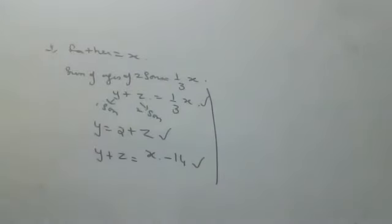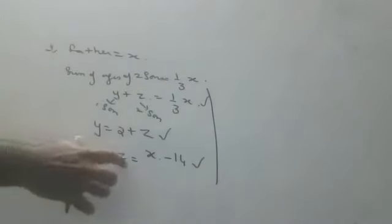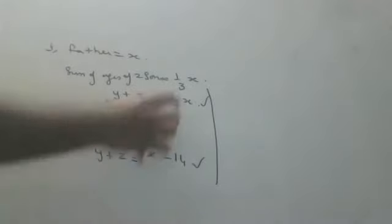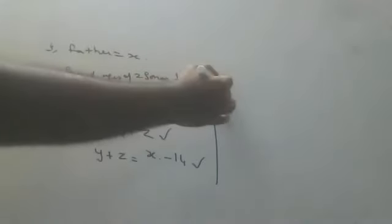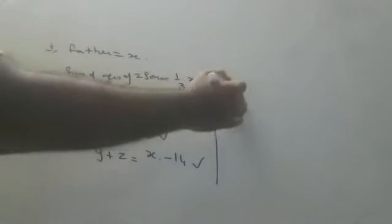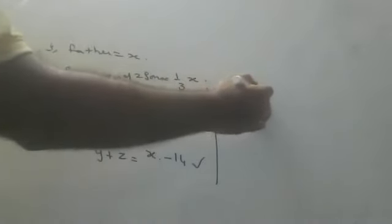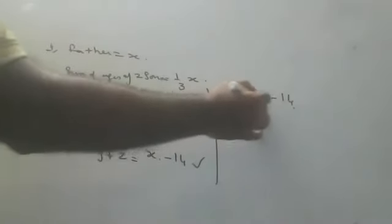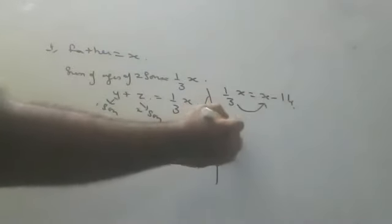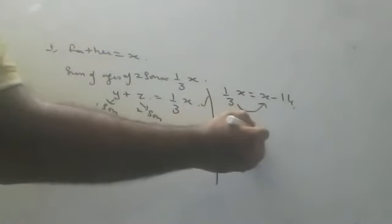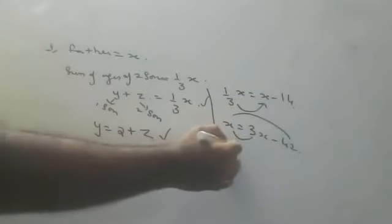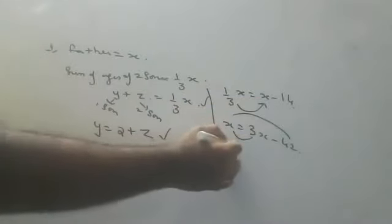Combining the equations: 1 by 3 of x with y minus 20 gives x equals 3x minus 42, so 2x equals 42, solving step by step. Bring the terms across: x equals 3x minus 42, giving 2x equals 42.